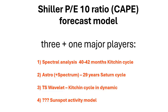Second, the new astro model reveals the presence of a 29-year cycle — this is a set of heliocentric cycles. This cycle works as well, and by the way, this cycle is also visible in the periodogram — the spectrum model reveals this cycle too.